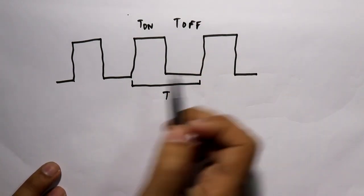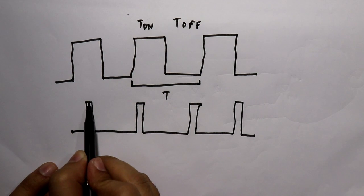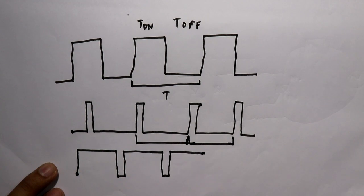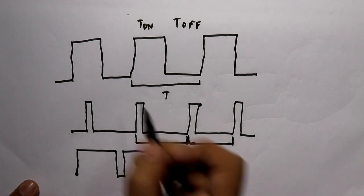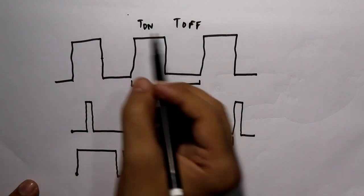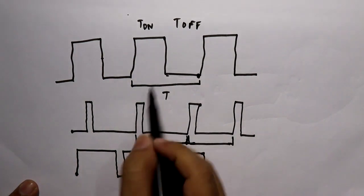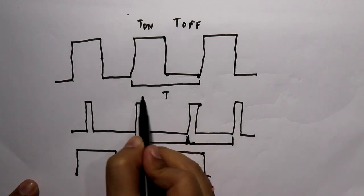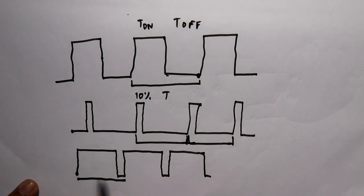In one waveform, T_on is very small but T_off is very large. In another waveform, T_off is very small but T_on is very large. When T_on and T_off are approximately equal, that is approximately 50% duty cycle — 50% on and 50% off. When T_on is very small compared to T_off, it is approximately 10% duty cycle.